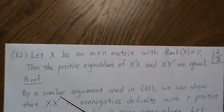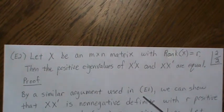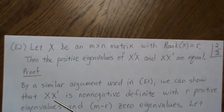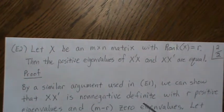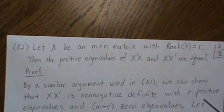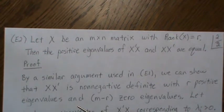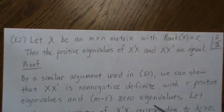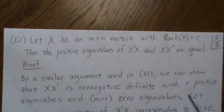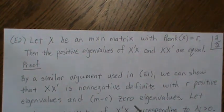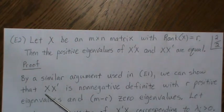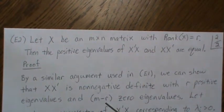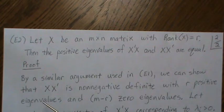Now, by a similar argument used in E1, we can show that X X prime is a non-negative definite matrix with R positive eigenvalues and M minus R zero eigenvalues. So they have the same number of positive eigenvalues, but different number of zero eigenvalues. X X prime has M minus R zero eigenvalues, and of course, X prime X has N minus R zero eigenvalues.